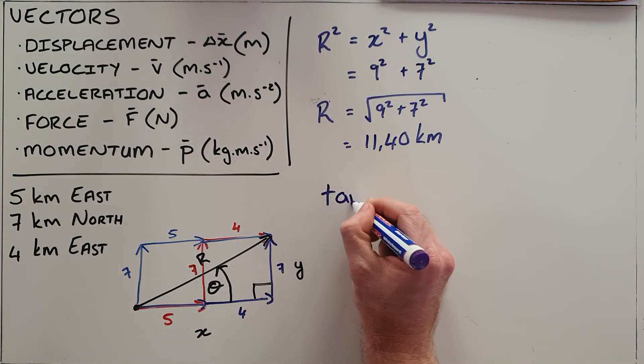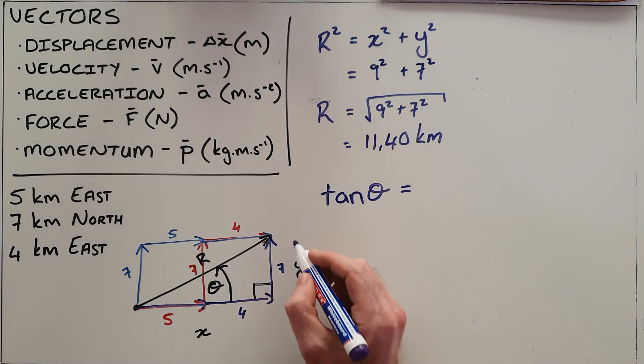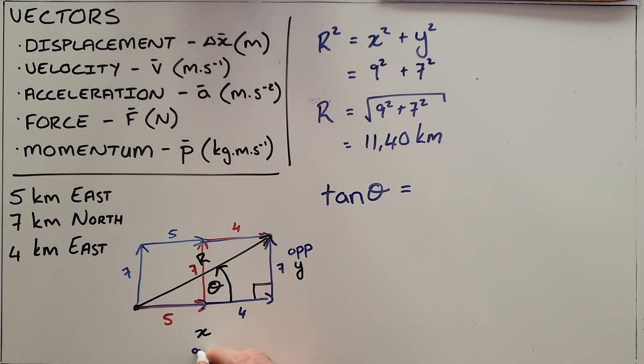The first one I will use is tan of theta. We know that tan of theta is always equal to the opposite side of the triangle over the adjacent side of the triangle.